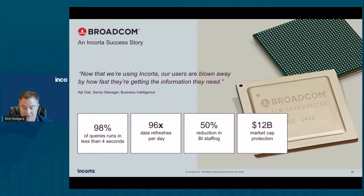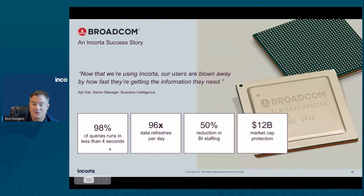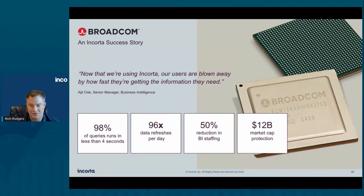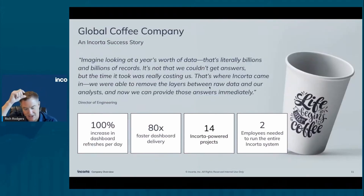Broadcom can go directly at the data source of any acquired company, bring that data into Encorta, and then with the business schema — the semantic layer — bring it together side by side in the analysis within seconds. As you can see here, 98% of their queries are running in less than four seconds, and they're able to do this in days rather than the weeks and months it used to take. They're doing 96 data refreshes a day with incremental loading, bringing in data from all different sources very efficiently.